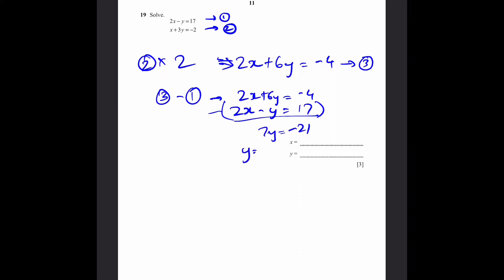Now you can go to question 19. Solve 2x minus y equals 17. x plus 3y equals minus 2. We can label this as equation 1, equation 2. Now we can multiply equation 2 times 2 to get 2x plus 6y equals minus 4. Why are we doing this? Because we can equate the x coefficients now. So you can write, let's say this is equation 3, and 3 minus 1, since both of them are positive 2, the coefficients of x. So you can do 2x plus 6y equals minus 4. 2x minus y equals 17. And subtracting this, we get 7y equals minus 21. So y equals minus 3.